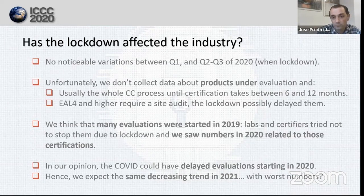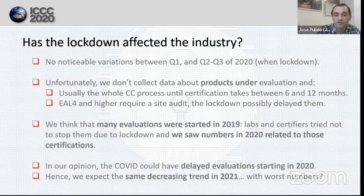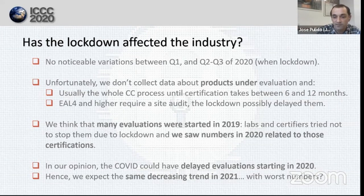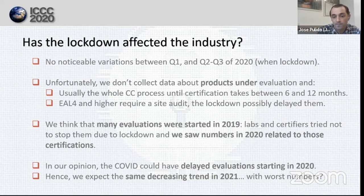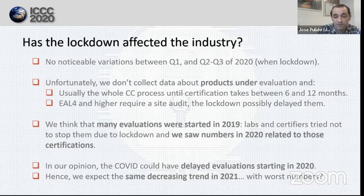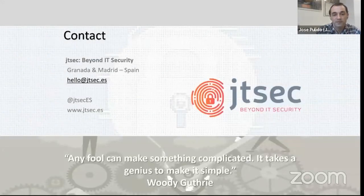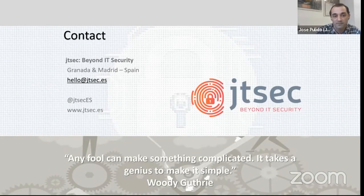However, the number of certifications for Q2 or Q3 of this year, when the lockdown began, didn't show big variations with Q1 or with the previous year. Nevertheless, we need to consider an important factor: CC certifications take usually many months, sometimes a year or more. Also, site visits have been more difficult to carry out — some have been virtualized, but they have delayed the whole process. Some of the statistics we saw could correspond to products with evaluations started in 2019, before COVID had spread. We can't argue from those statistics that COVID has slowed down the certification industry, and we sadly foresee that the decreasing numbers will continue during the next year. Thank you very much. If you have any questions or feedback, feel free to send to us and we will try to improve our collection of statistics.